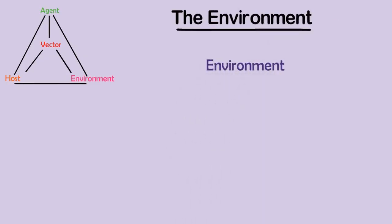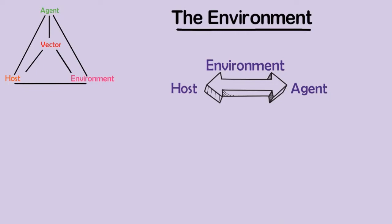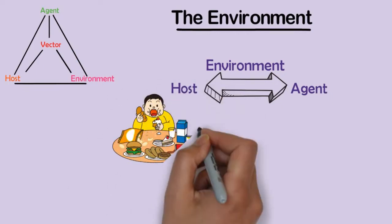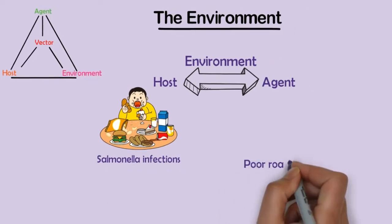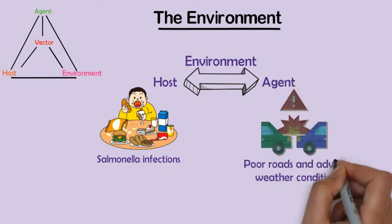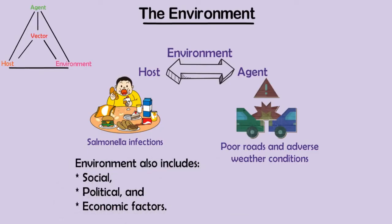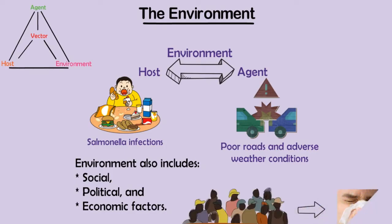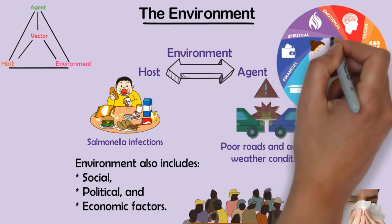The environment influences the probability and circumstances of contact between the host and the agent. Poor restaurant sanitation increases the probability that patrons will be exposed to salmonella infections. Poor roads and adverse weather conditions increase the number of automobile collisions and airplane crashes. The environment also includes social, political, and economic factors. Crowded homes and schools make exposure to infectious diseases more likely, and the political structure and economic health of a society influence the nutritional and vaccine status of its members.